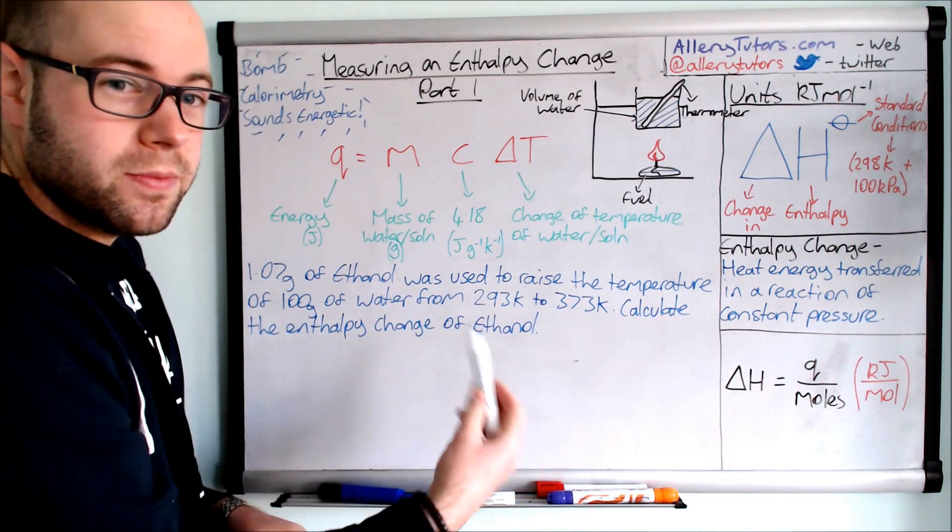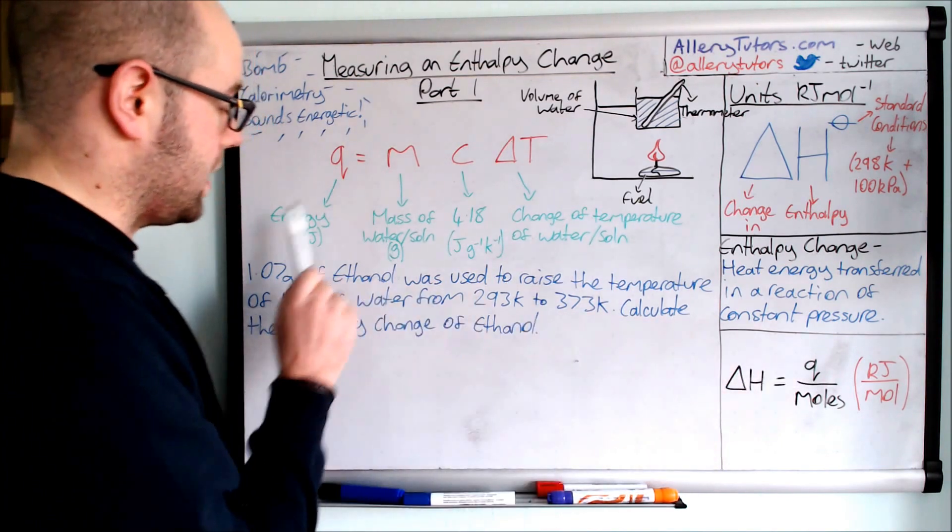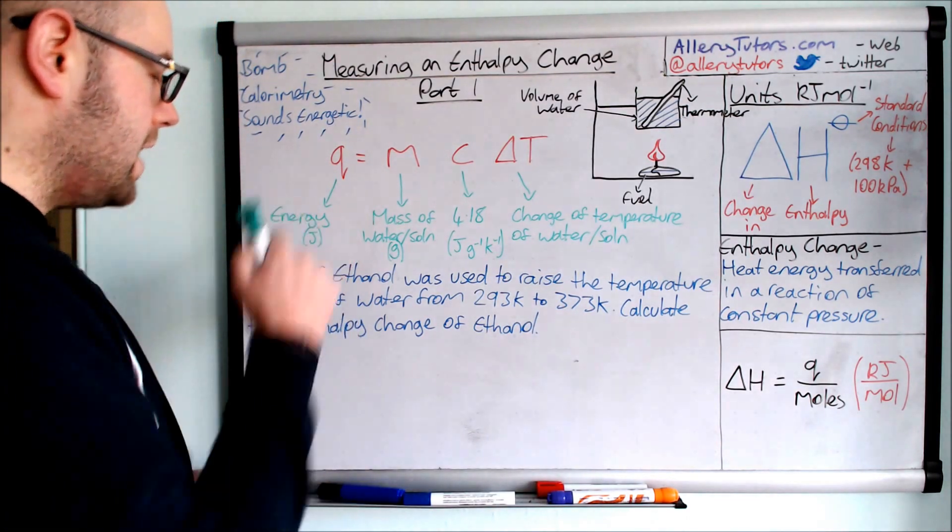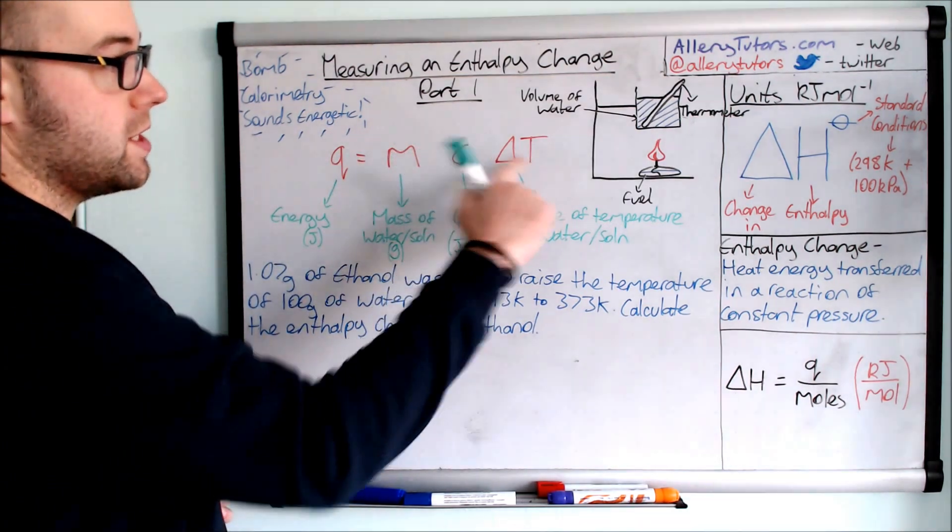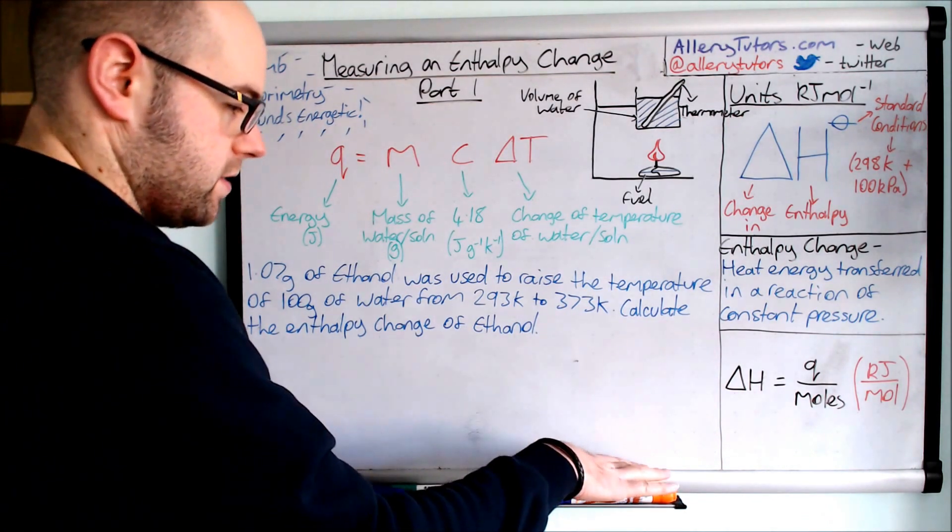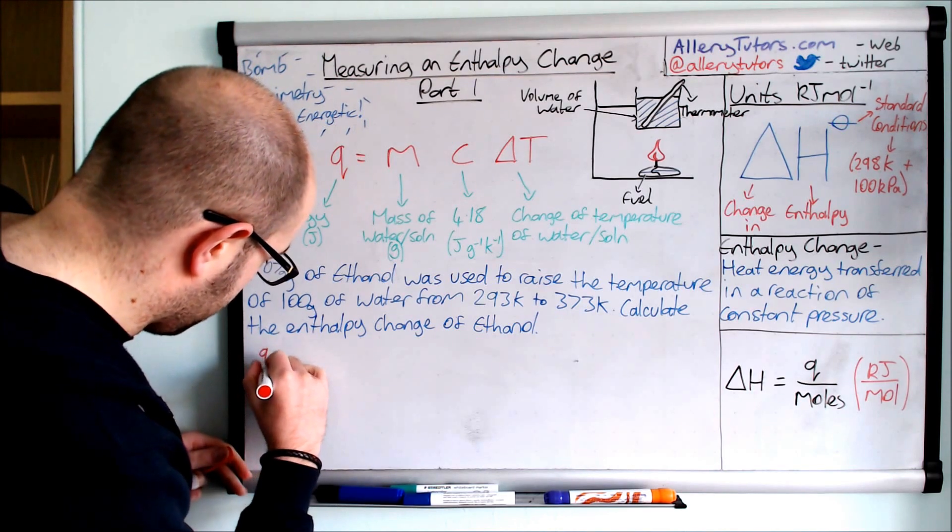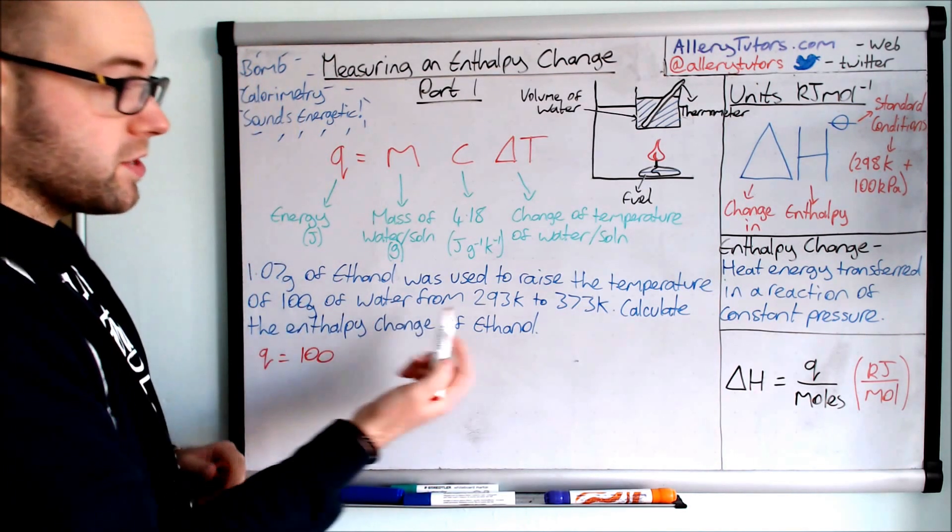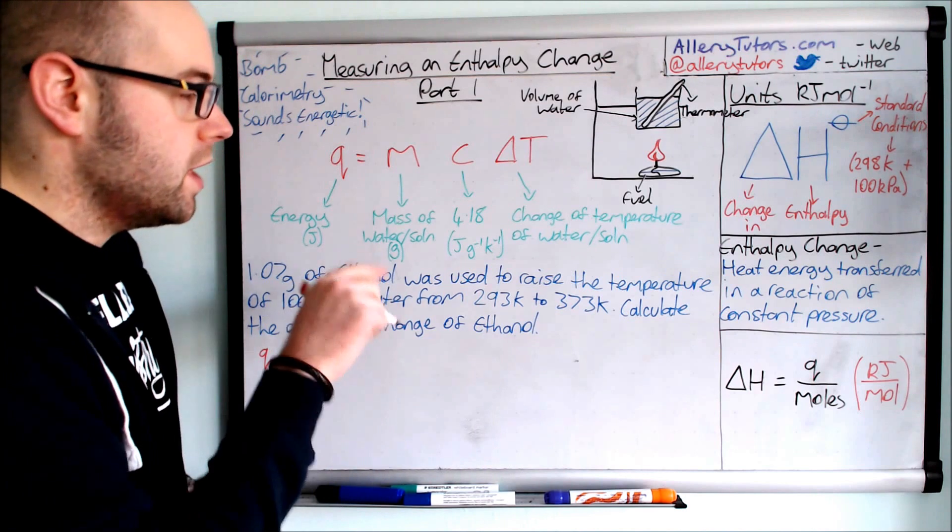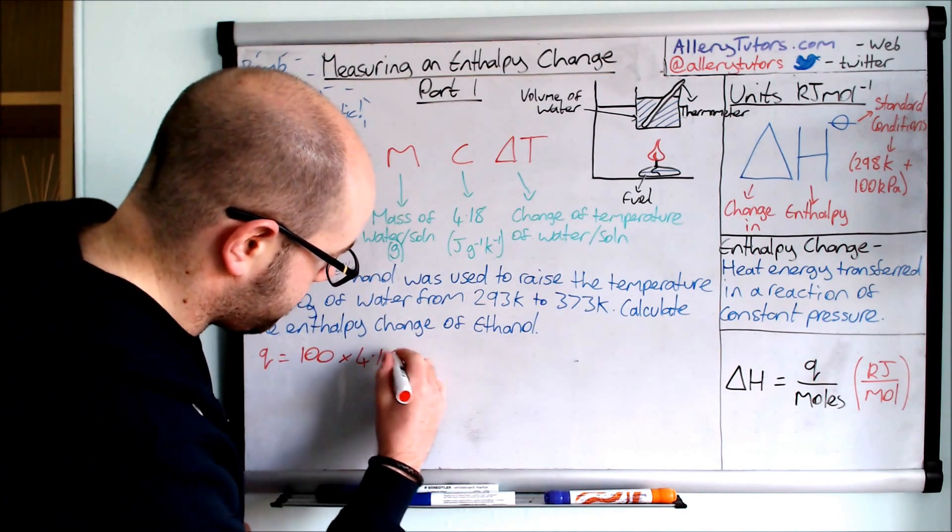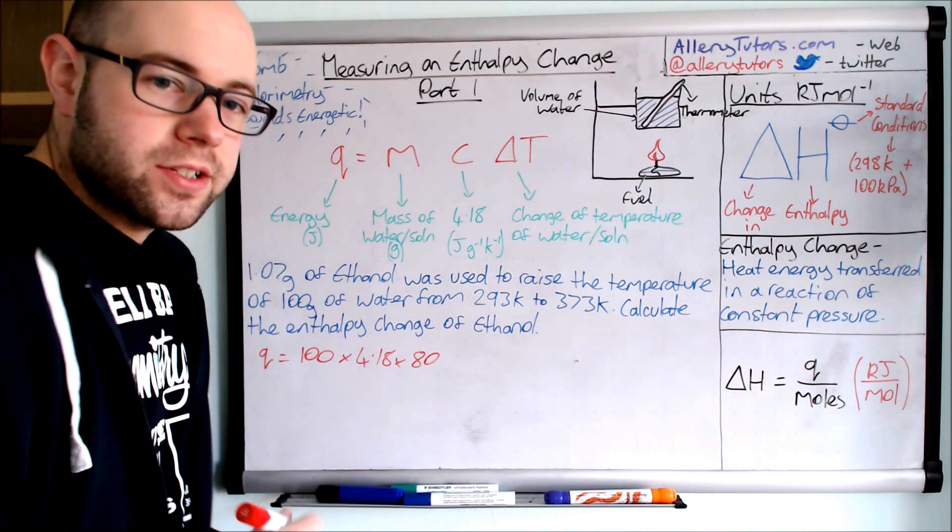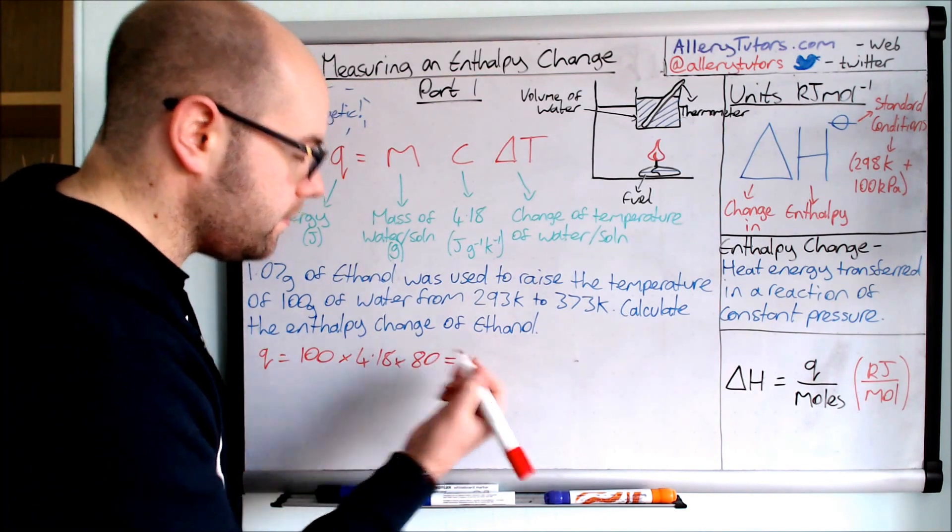There's your energy. Energy is measured in q. To measure the enthalpy change we have to divide the energy that we calculate from here, and we have to then work out the number of moles to work out our enthalpy change. So energy is going to be the mass times c times delta t. In this case the mass is going to be a hundred, we're going to write this in red. So q equals, and we've got a hundred. Now it's a hundred grams of water, it's the mass of the liquid we're heating up, not the fuel that we're using here. So it's a hundred grams and we're going to multiply that by 4.18, and we're then going to multiply that by 80 because that's our temperature change.